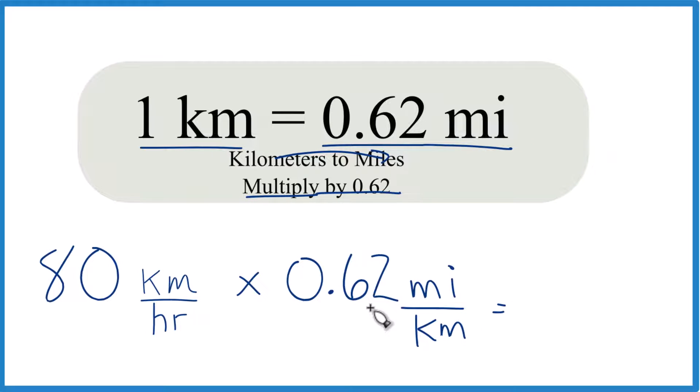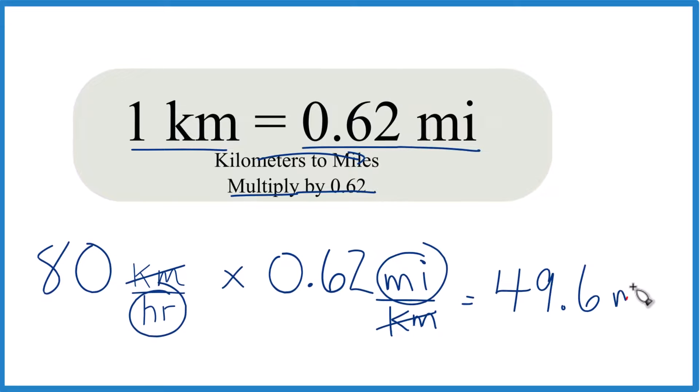So 80 times 0.62, we get 49.6 miles per hour, because kilometers top and bottom cancel out, leaving miles per hour, which is what we're looking for.